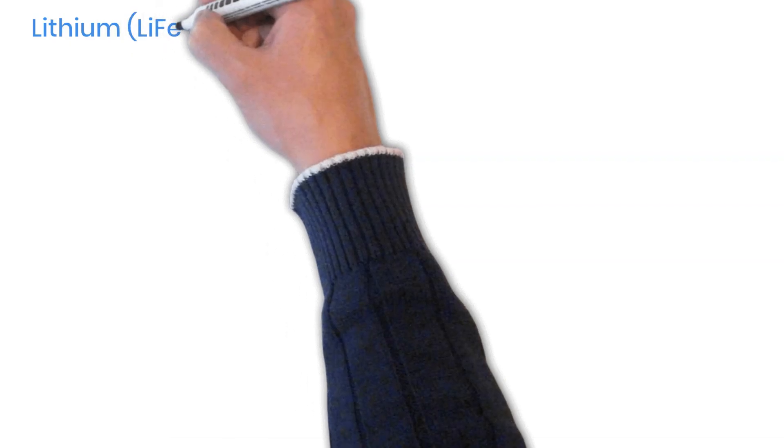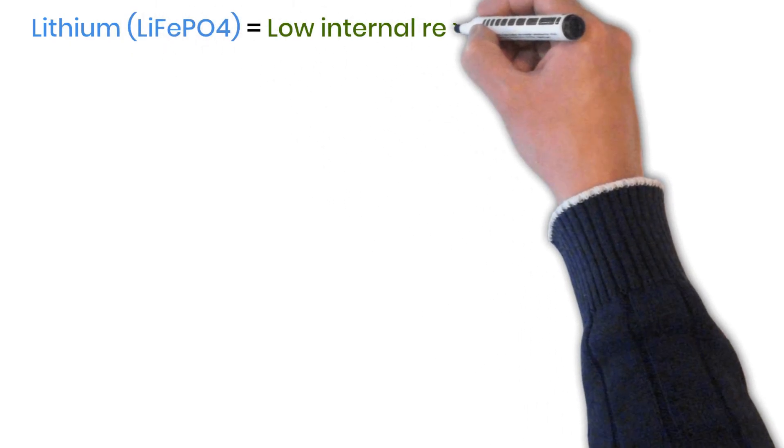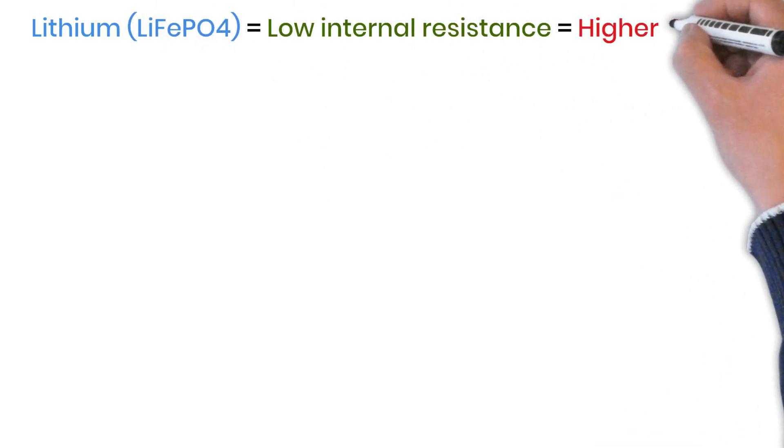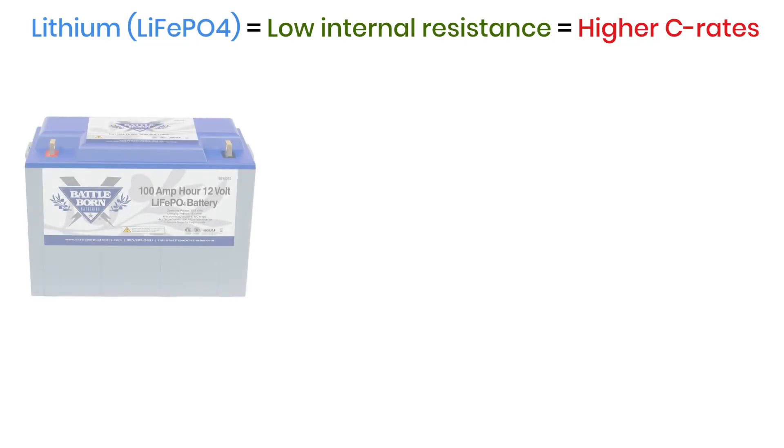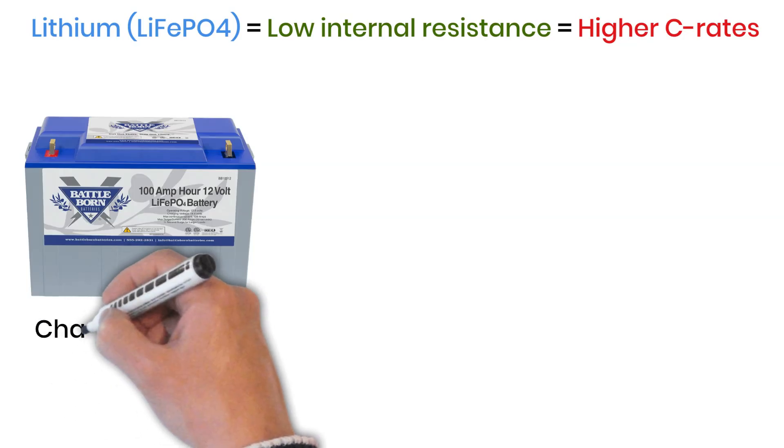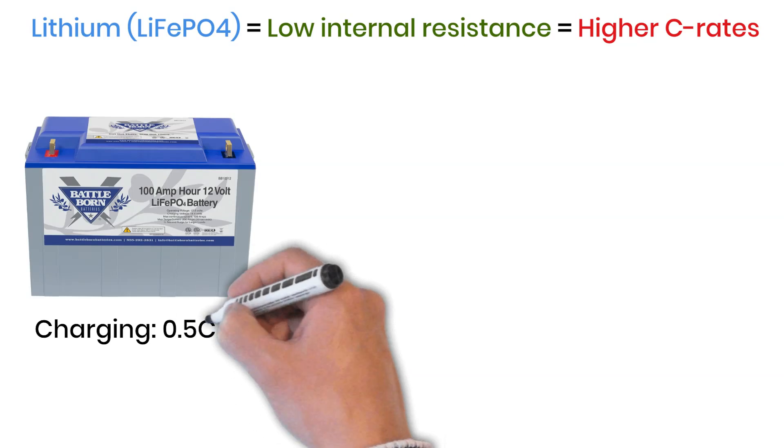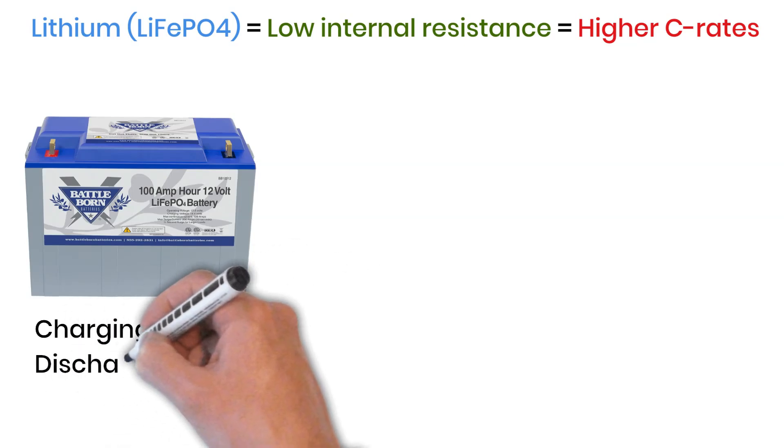Lead-acid and lithium batteries don't follow the same C-rate rules. Lithium batteries can handle much higher charging and discharging currents because their internal resistance is extremely low compared to lead-acid. For example, a popular lithium battery brand like Battleborn lists a charging C-rate of 0.5C or C2, and a discharge rating of 1C.